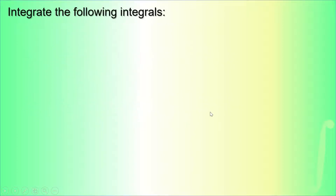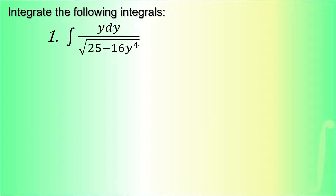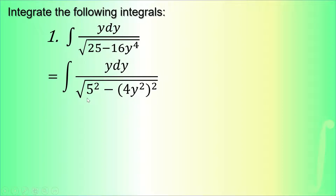For example, we are going to integrate y dy over the square root of (25 - 16y⁴). Based on our formula, we identify values a and u under the square root sign so we can use the arcsin formula. Here 25 = 5², and 16y⁴ = (4y²)², so our u is 4y². If we differentiate 4y², that gives 8y dy, which must be present on our numerator.